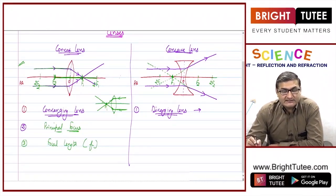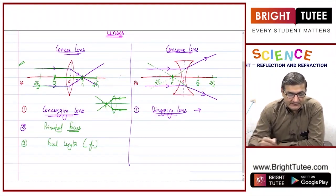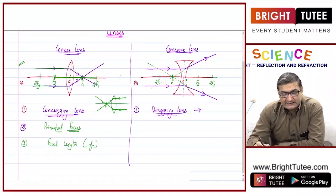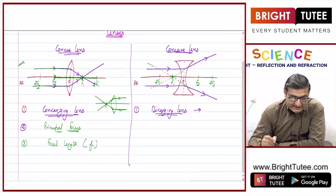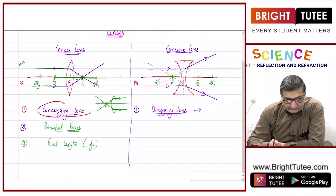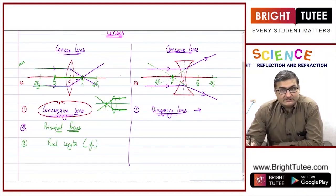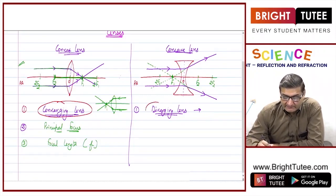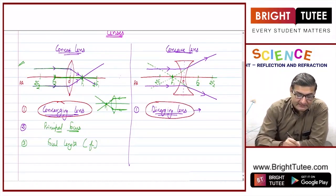Let us look at the differences between convex lens and concave lens. First, structure-wise: a convex lens is thick at the center and thin at the edges, whereas a concave lens is thin at the center and thick at the edges. Second, a convex lens is a converging lens — it bends incident rays towards the principal axis — whereas a concave lens is a diverging lens.